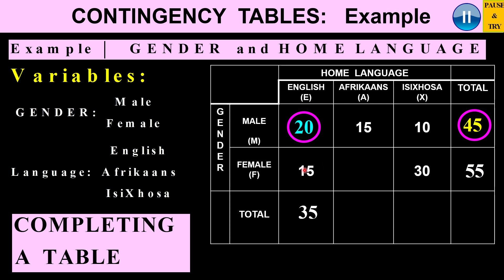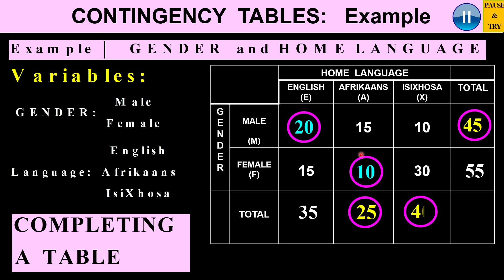Looking at the row for females, I have a total of 55. The missing value there is 55 minus 15 minus 30, which gives me 10. The total for the Afrikaans column is 15 plus 20, which is 25. The total for the Isizulu column is 10 plus 30, which is 40. And then the grand total is 45 plus 55, which is exactly 100. Cross-checking: 35 plus 25 plus 40 also equals 100.